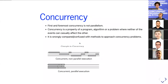Now that I've introduced myself, let's jump into what we came here for. We're going to discuss concurrency. The first and foremost thing I want to share is that concurrency is actually not parallelism — concurrency is a property of a program and an algorithm.